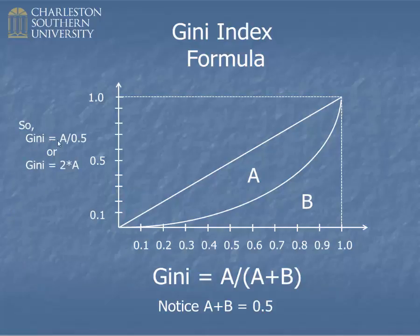By substitution, you can think of the Gini index as A divided by 0.5, or you can bring the 0.5 upstairs into the numerator, and the Gini index is just 2 times A. I've seen this in some books, but I don't think it's very helpful for students. It seems to me it's much more instructive to think of the Gini index as it was originally proposed — the ratio of area A to that triangle. But either way is good.